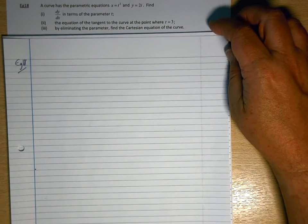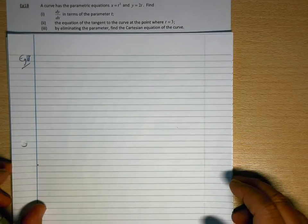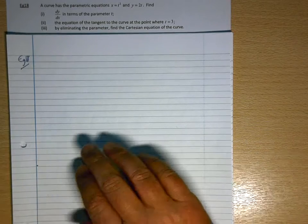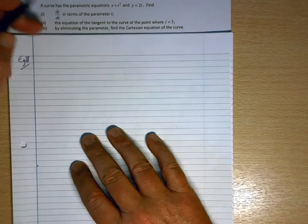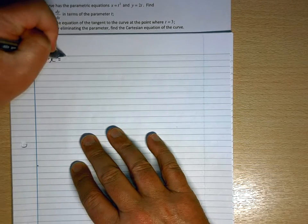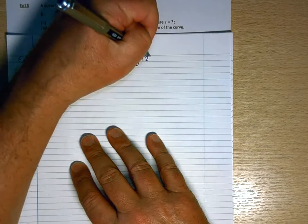Okay, so let's have a look at how these parametric equations are dealt with when it comes to differentiating. So eg18, a curve has the parametric equations x equals t squared and y equals 2t.